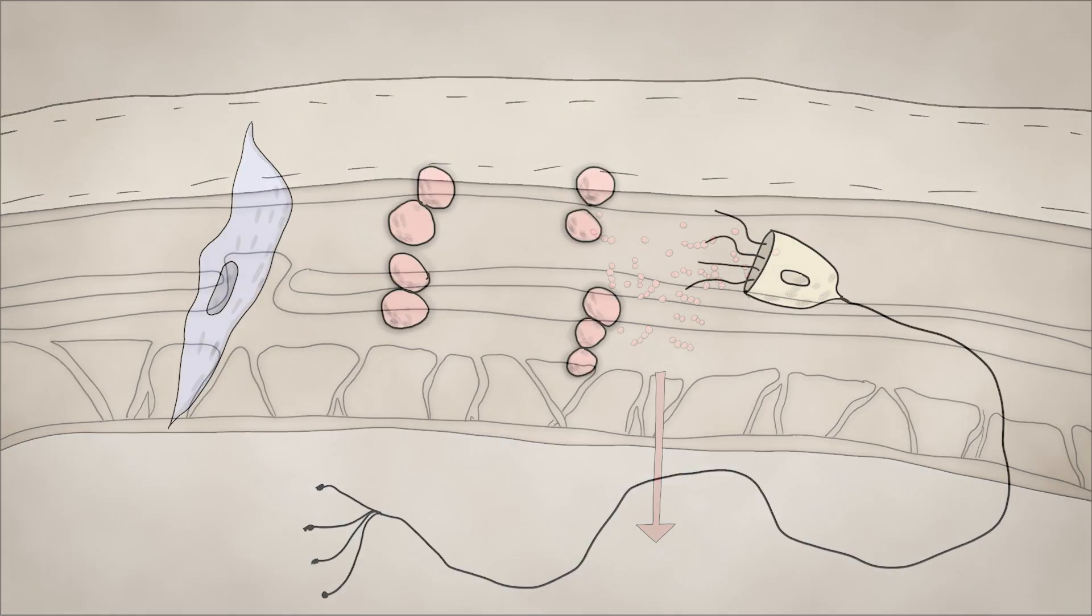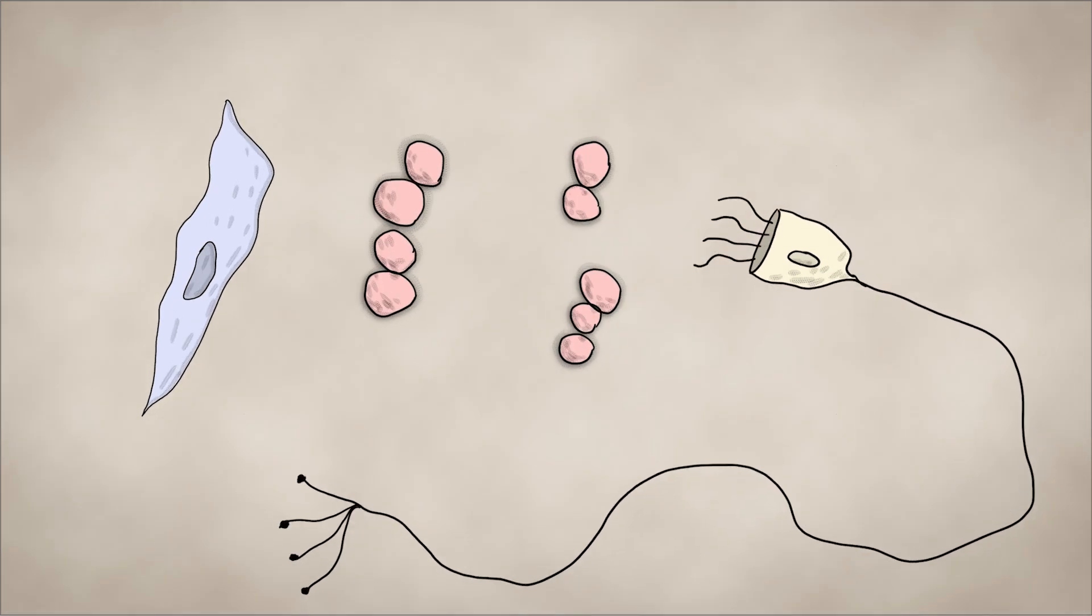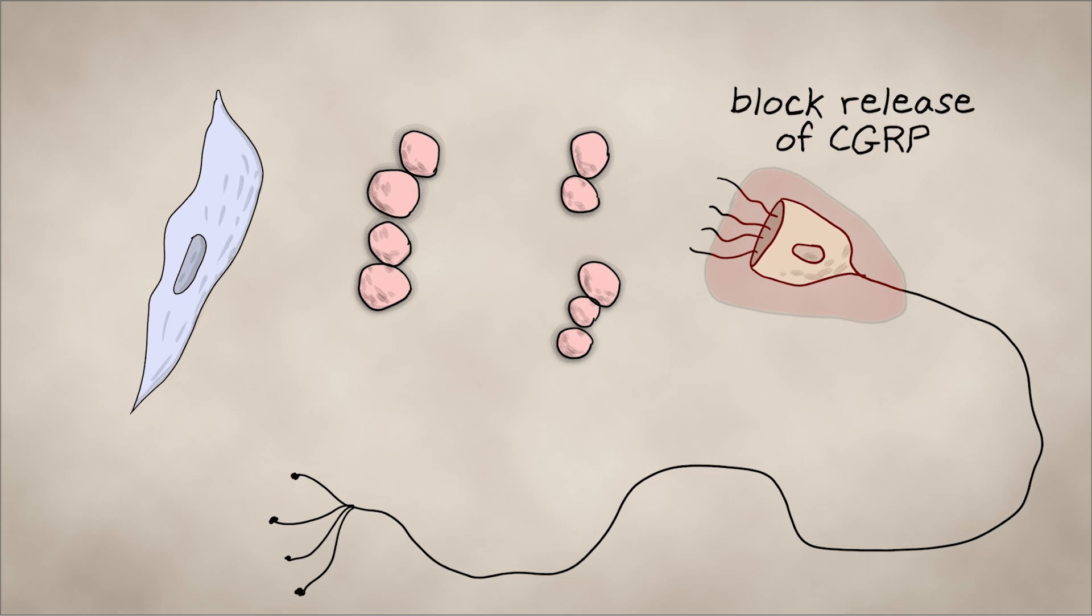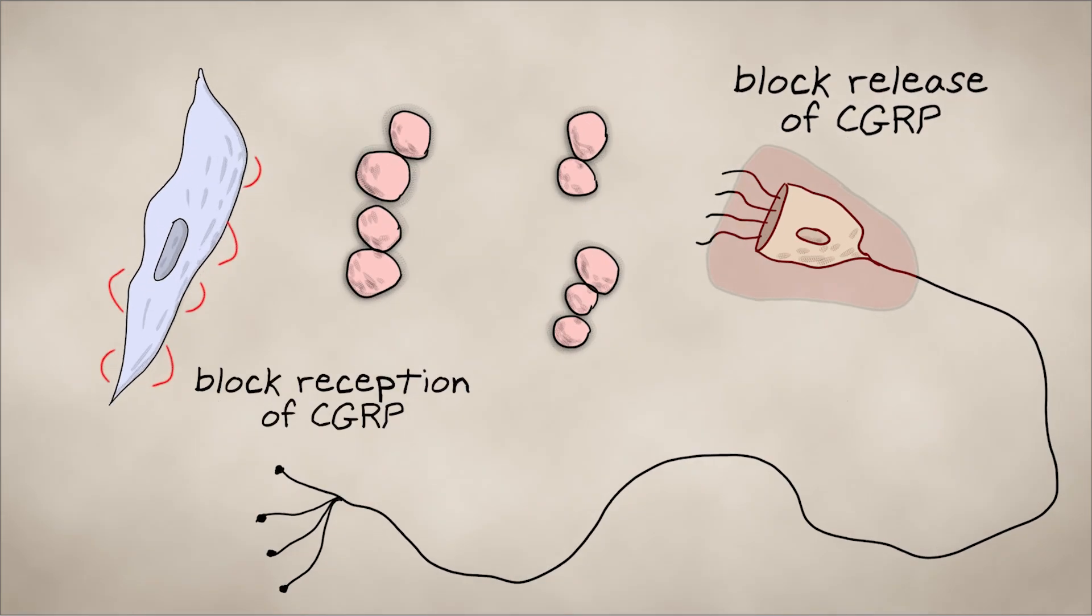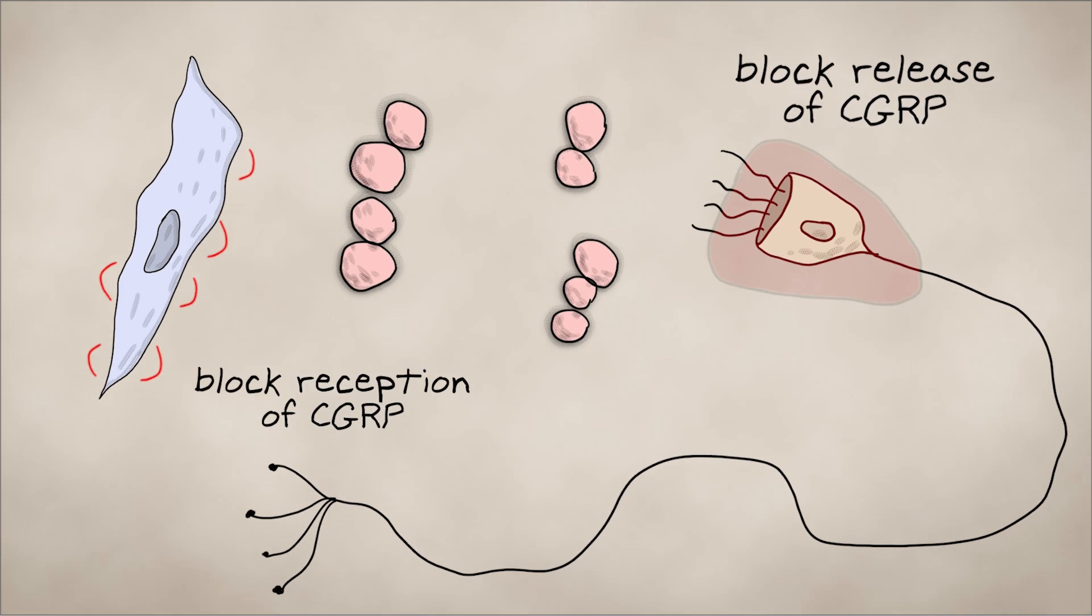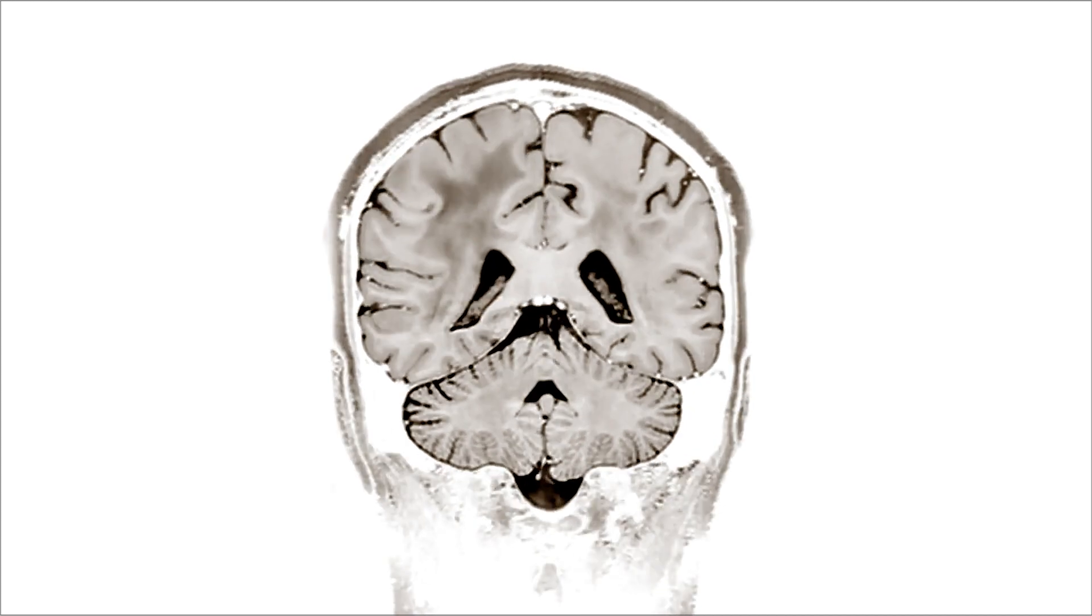The work, which was done in mice, could pave the way to new therapies. Drugs that block either the chemical CGRP or the immune cell receptors that interact with it could target the critical early stages of infection. This approach could become the basis for much needed treatments for meningitis.